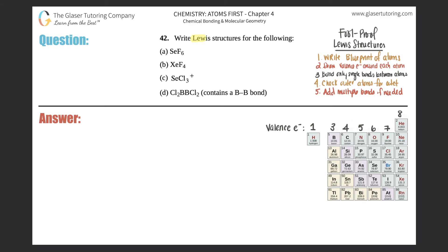Number 42: write Lewis structures for the following, parts a through d. We've already done three questions with Lewis structures, building up to more and more complex ones. If this is your first attempt at Lewis structures, go back to number 39 on the playlist - those are the easy ones which will get you all the way up to this point.